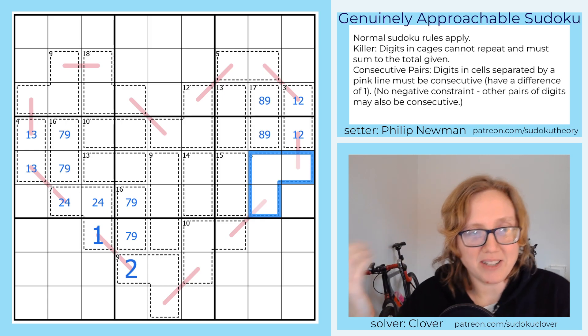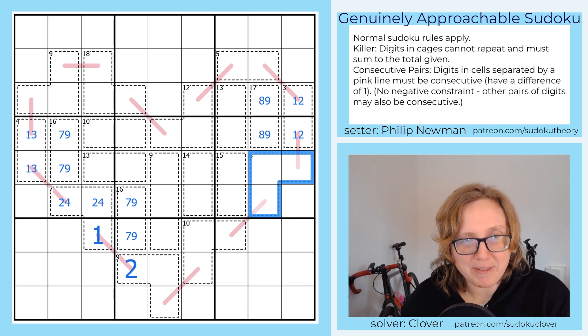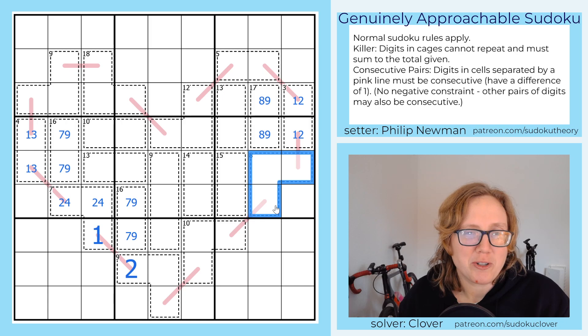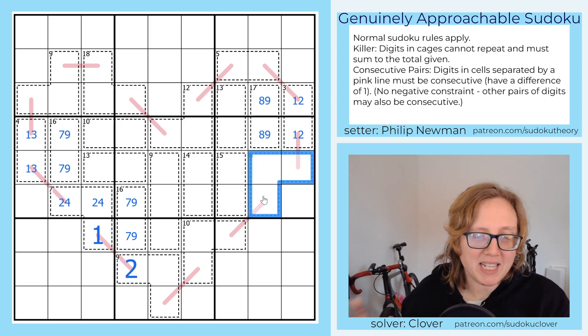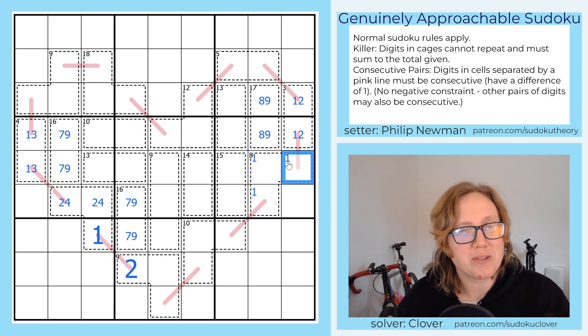Another possibility is that you just have seen this often enough that you happen to remember, eight killer cage in three cells, there are only two ways to do that. That's one of those things that's used very often in puzzles, even in relatively straightforward puzzles. So it's worth keeping track of if you do a lot of these. Either way, both of those options, the key thing here is they both include a one. And in fact, eight and three cells always includes a one.